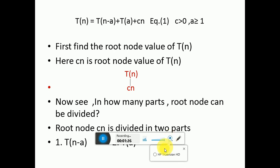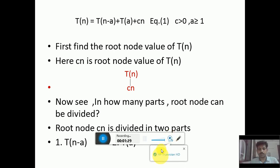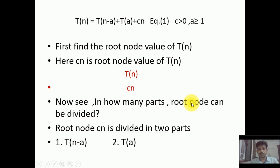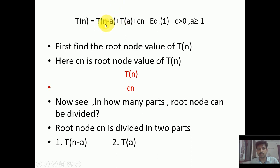This is our original equation, equation number one. First, we find the root node value of T(n), which is c·n. We can see that c·n is divided into two parts: the left sub-problem is T(n-a) and the right sub-problem is T(a). Again we have to find the root node value of T(n-a) and T(a).